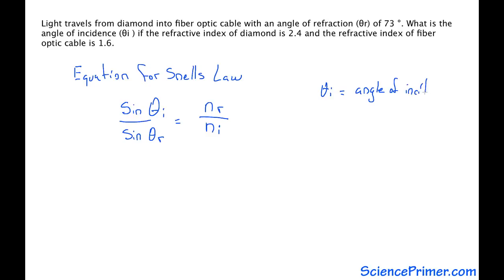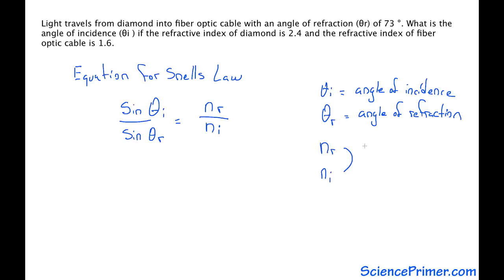So theta i is the angle of incidence, theta r is the angle of refraction, nr is the refractive index of the refracted medium, and ni is the refractive index of the incident medium.